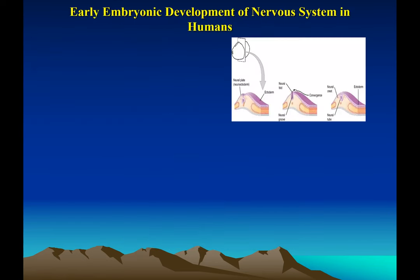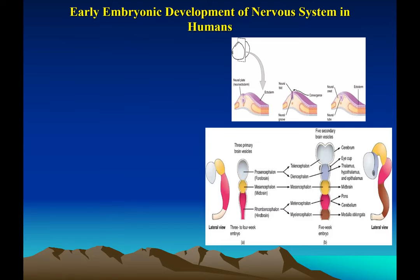This slide shows embryonic development in the first few weeks of pregnancy. Starting from the blastocyte, it develops into the ectoderm, mesoderm, and endoderm. The ectoderm folds inward — a group of cells called the neural plate. These cells invaginate and fold in to form the neural fold, which then completely cuts off from the outside to become the neural tube. It is the neural tube that further develops into the brain.